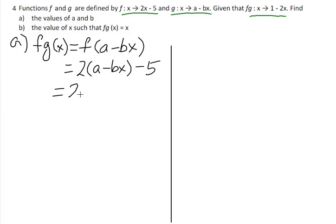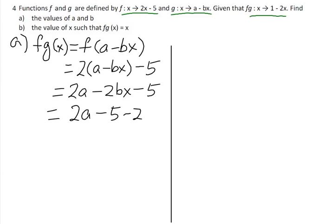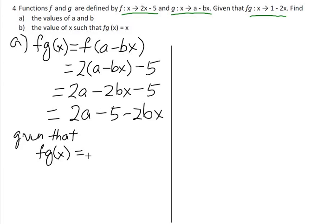This is equal to 2a minus 2bx minus 5. Let's rearrange it: equal to 2a minus 5 minus 2bx. And it is given that fg(x) is equal to 1 minus 2x.